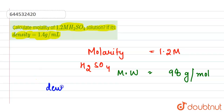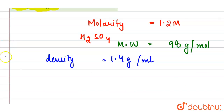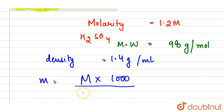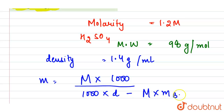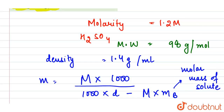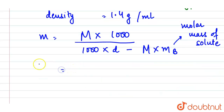We are also given the density, which is equal to 1.4 grams per milliliter. When we are given these three values, the formula for molality is: molality = (molarity × 1000) / (1000 × density − molarity × Mb), where Mb is the molar mass of the solute.